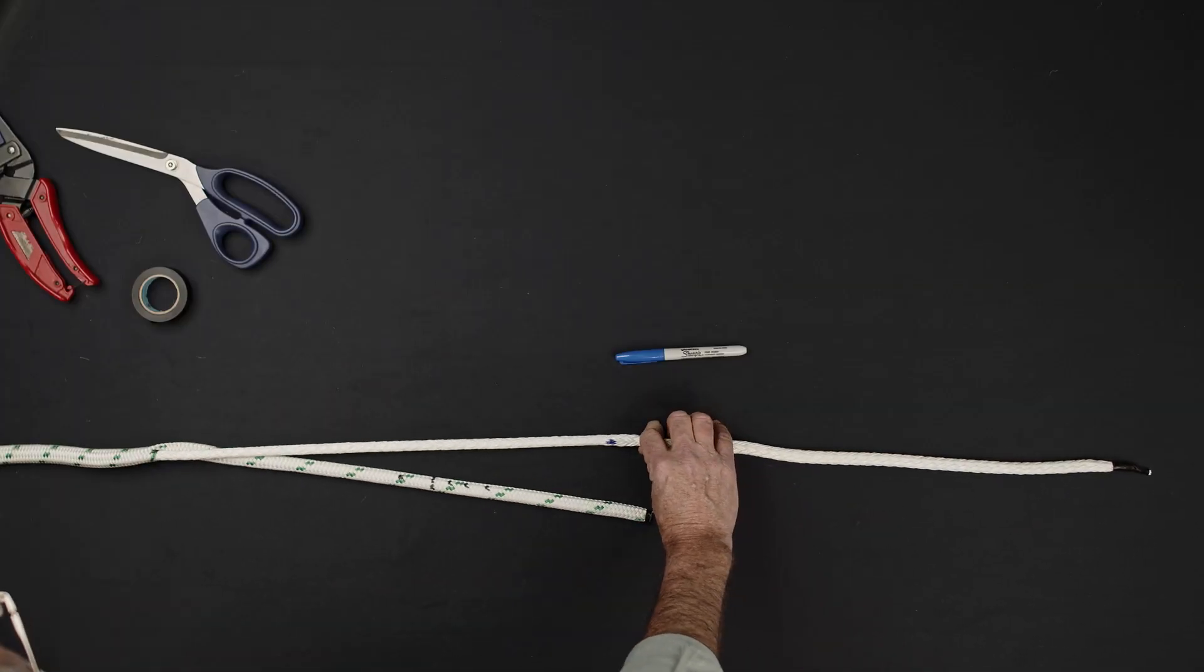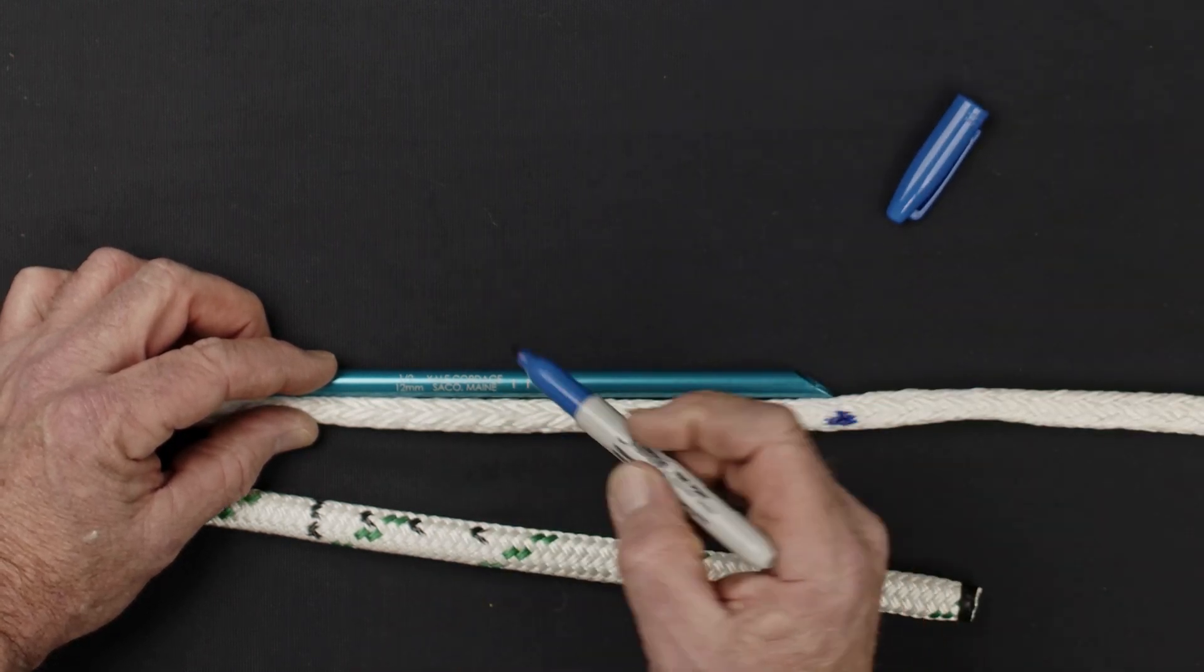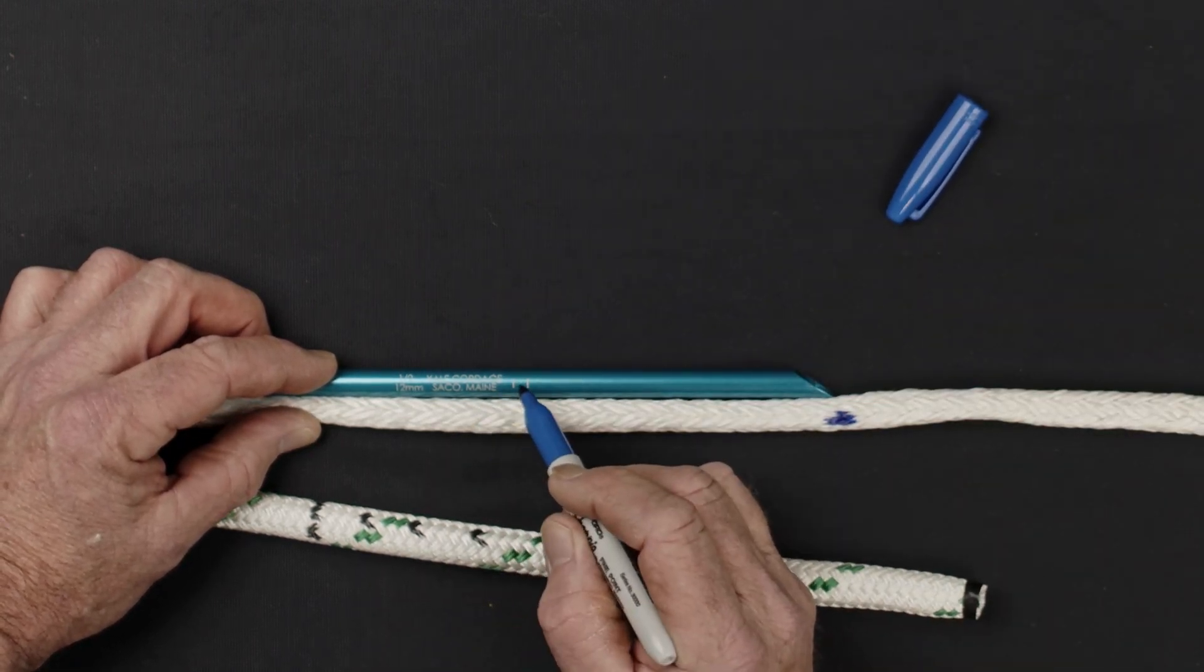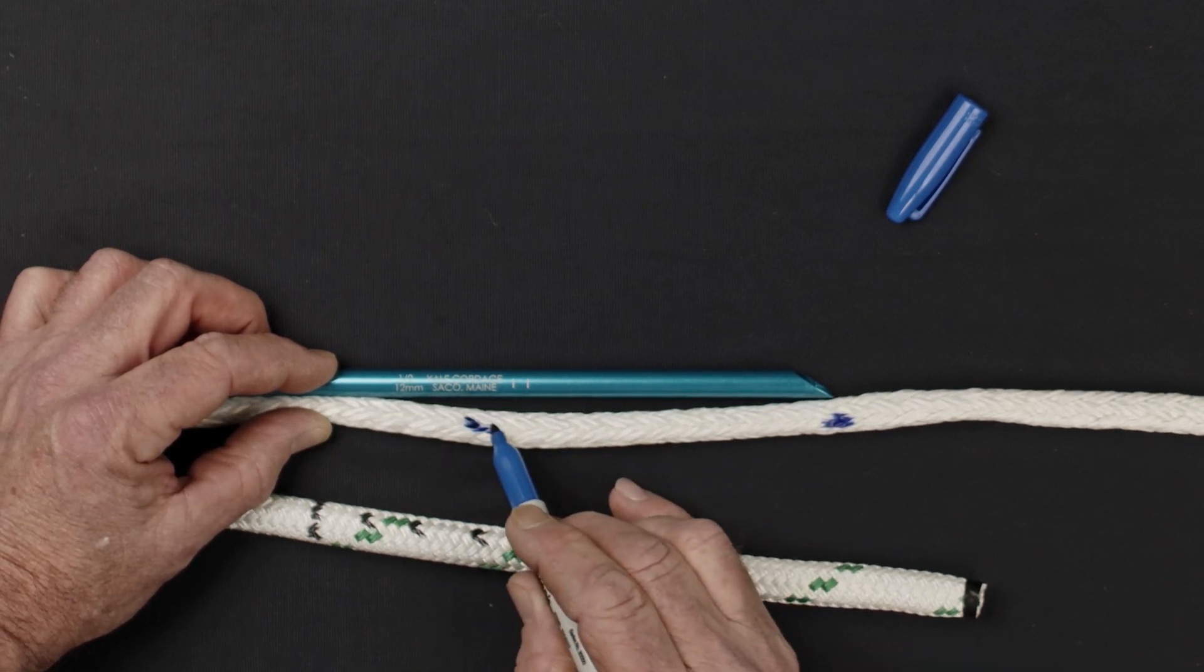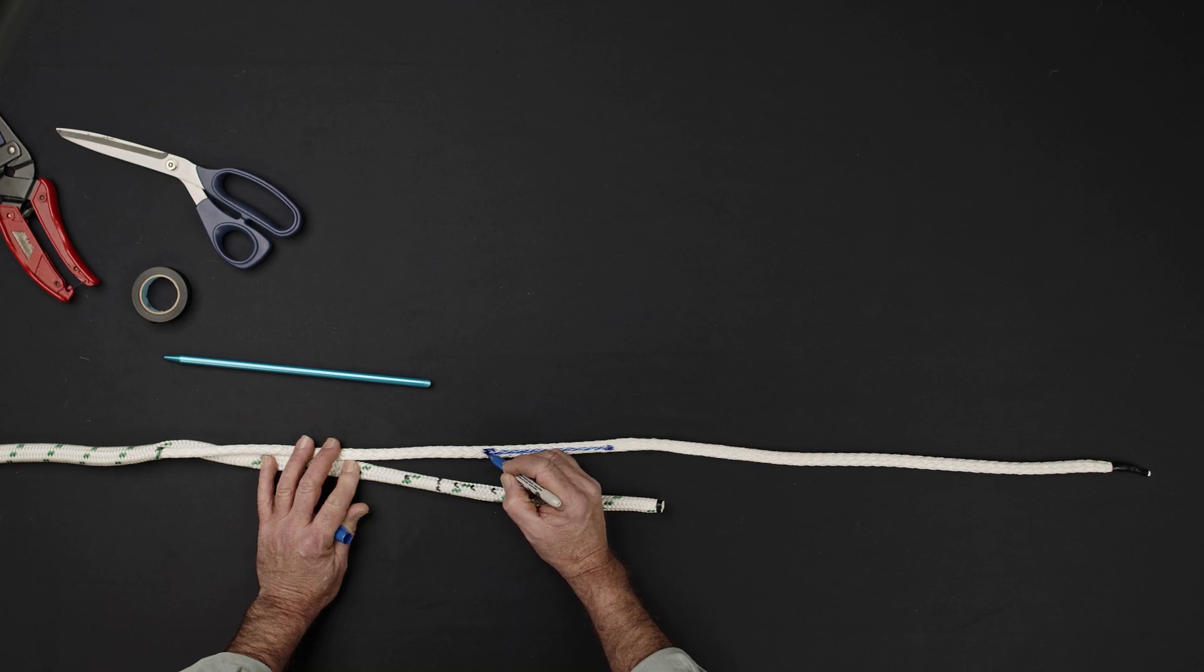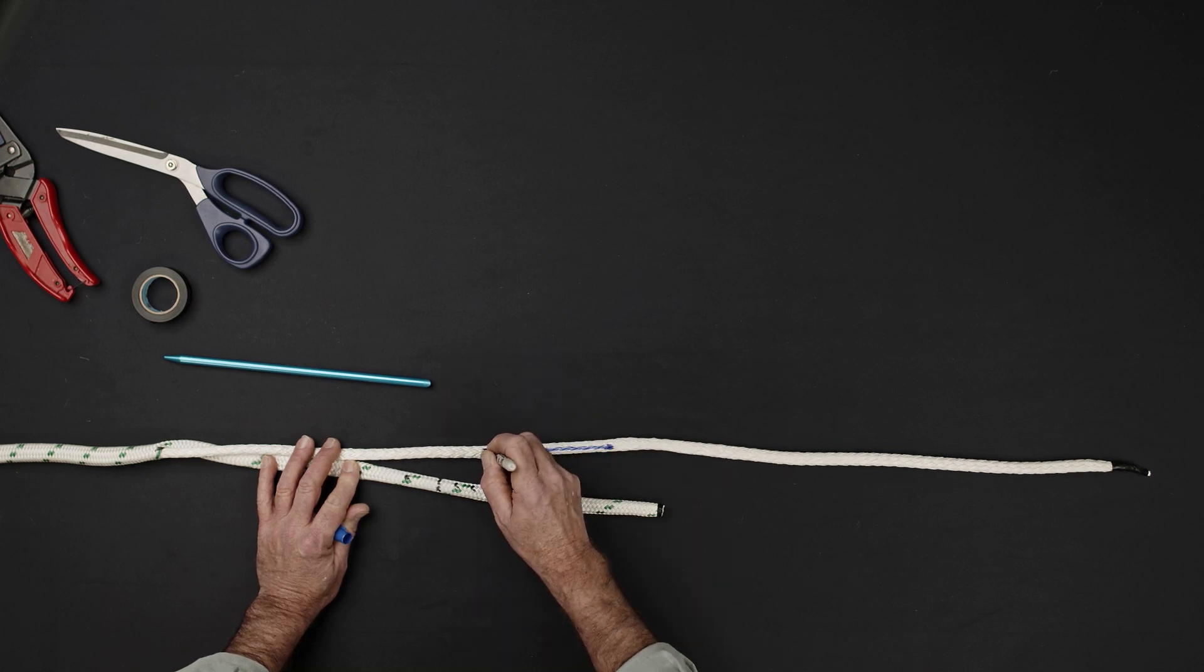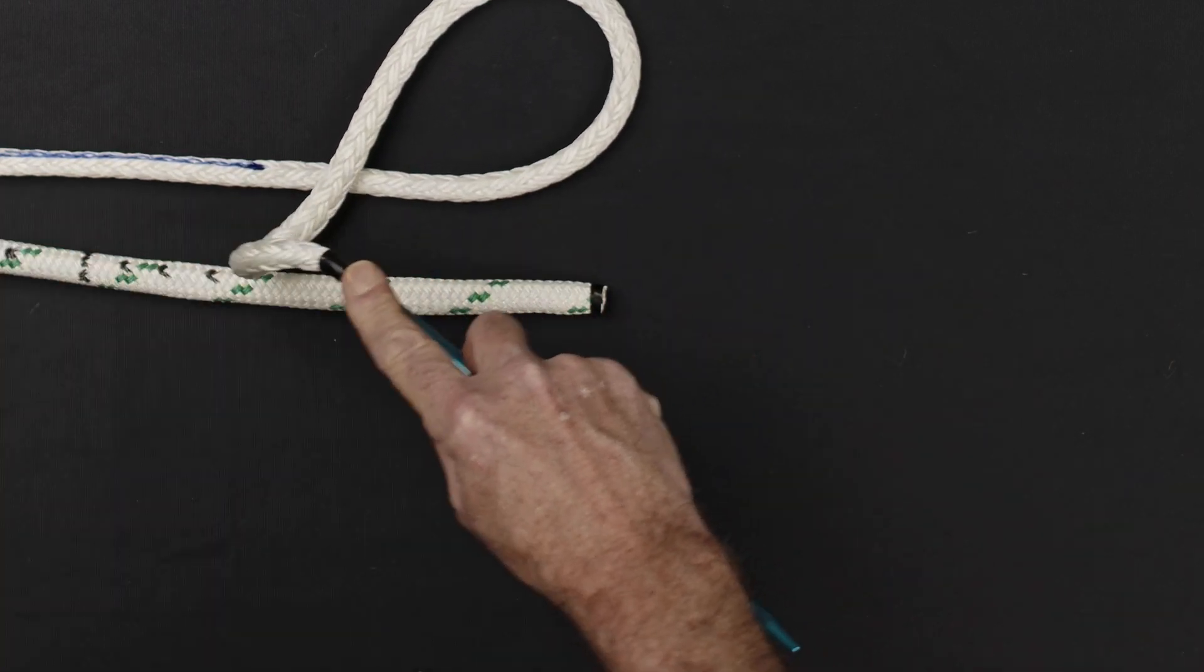Extract a short length of the core and make a new mark one half FID length from the mark you just made working away from the end of the rope. This crossover mark indicates the location that the tapered sleeve will be inserted back into the center of the core. Insert the tapered end of the core into the back of the FID and tape it tightly.